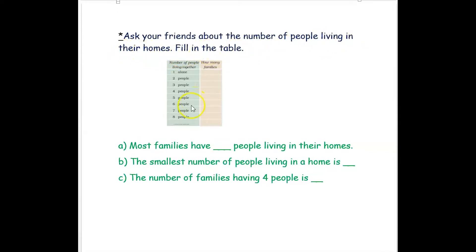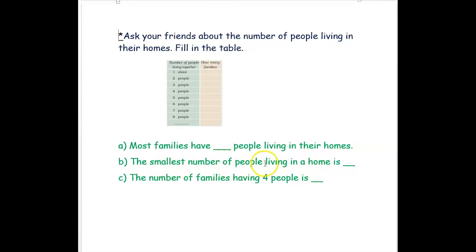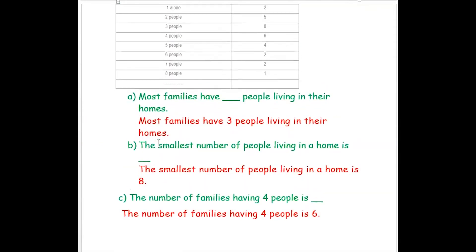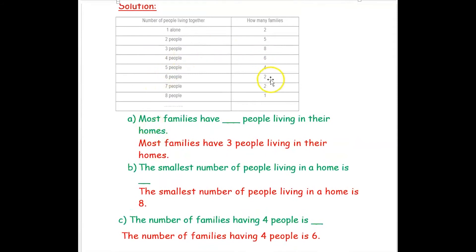They have given a table here, so we have to ask our friends and fill in the number of people living in their families — one, two, three, four, five, six, seven, eight people — and count the number of friends for each. The questions are: the most families have how many people living in their homes? The smallest number of people living in a home is? And the number of families having four people is?